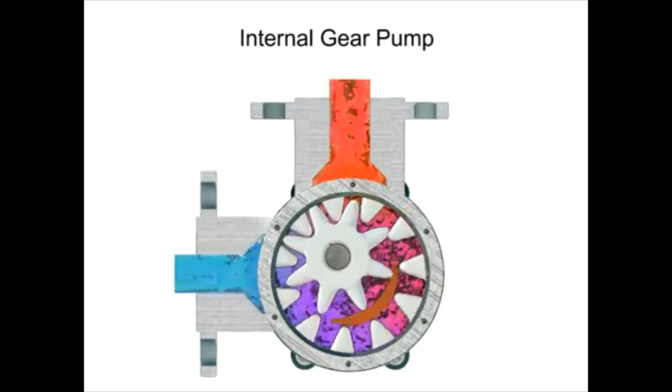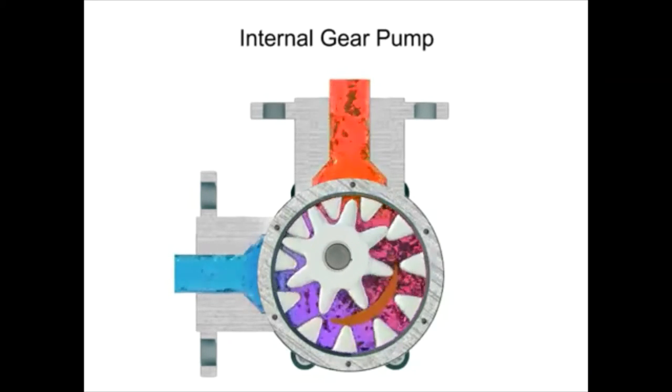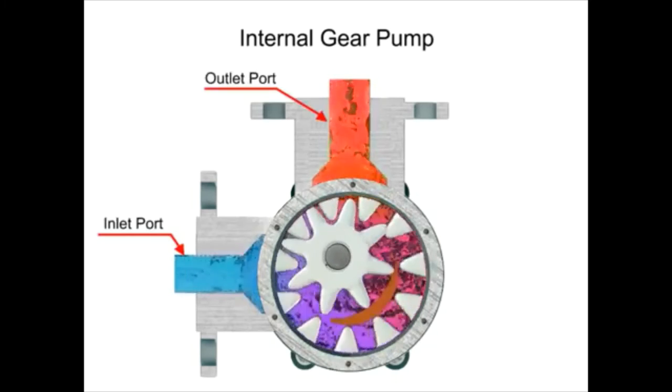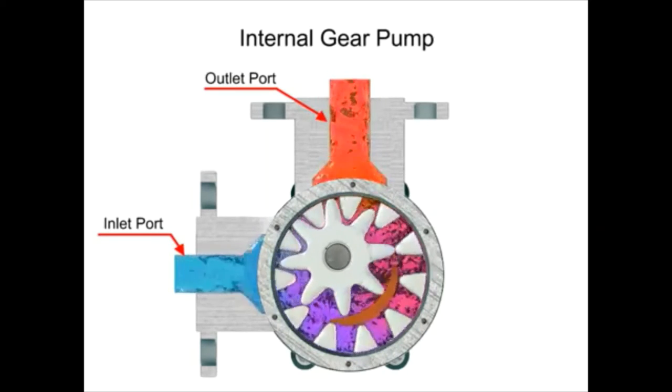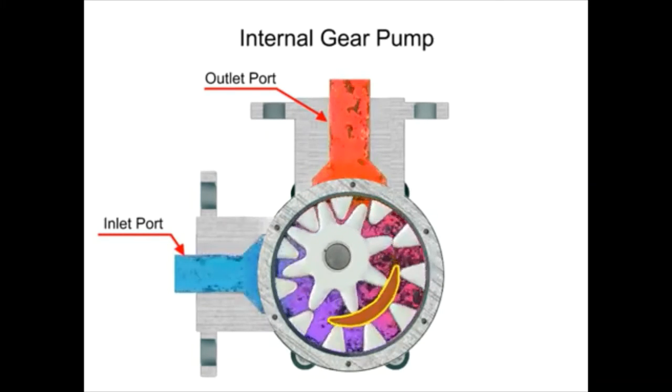As the inner gear rotates, it meshes with and moves the outer gear. Liquid is trapped in the gear spaces and carried from the inlet to the discharge. A stationary crescent-shaped divider separates the intake and discharge portions of the fluid.